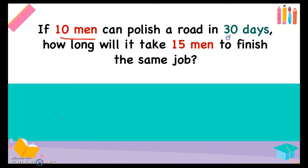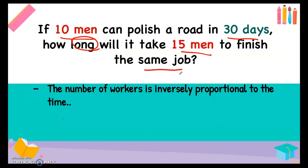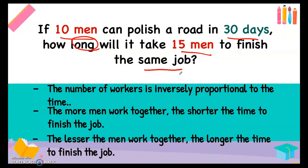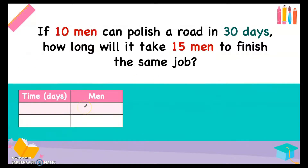...who can finish the road in 30 days, how long will it take 15 men to finish the same job? The question is how long, so we are going to find the time in days. If more men are working the same job, it will take less days. The number of workers is inversely proportional to the time. The more men working together on the same job, the shorter the time to finish. The lesser the men, the longer the time — this is indirect proportion.